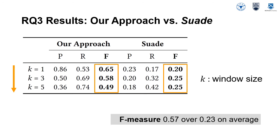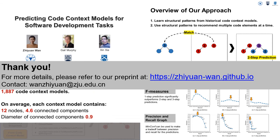The third research question asks how our approach compares to the state-of-the-art represented by the Suede algorithm. This table compares the precision, recall, and F-measure values of our approach and Suede. Our approach shows F-measure values of 0.65, 0.58, and 0.49 when window size k equals 1, 3, and 5 respectively, indicating that our approach significantly outperforms Suede. In addition, the performance metrics of both approaches show a similar tendency: as window size k increases, precision values decrease but recall values increase.